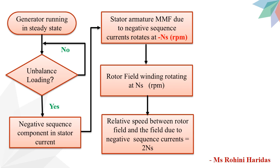Here you can apply the basic concept of finding relative speed. The relative speed is defined as the speed of a moving object with respect to another. When two objects are moving in the same direction, the relative speed is calculated as their difference. When two objects are moving in the opposite direction, the relative speed is computed by adding those speeds. In this case, both fields are rotating at synchronous speed but in opposite directions, and therefore the relative speed between the two is calculated by adding their speeds, which is nothing but twice NS.